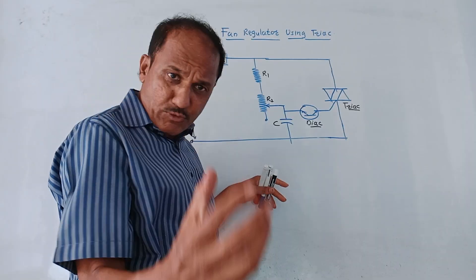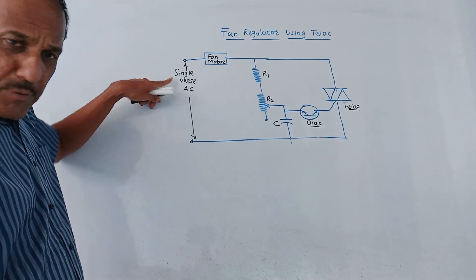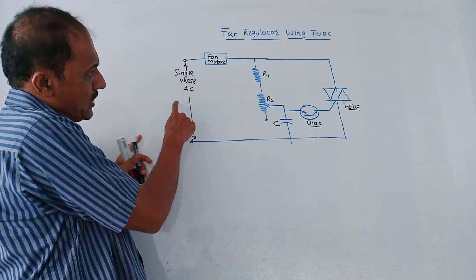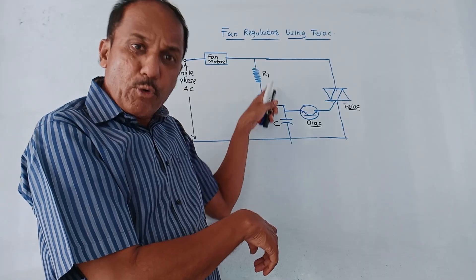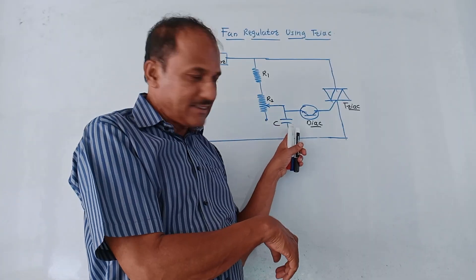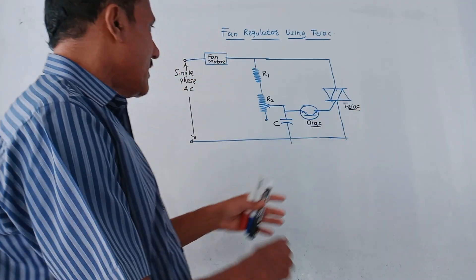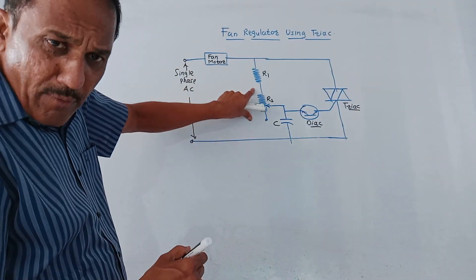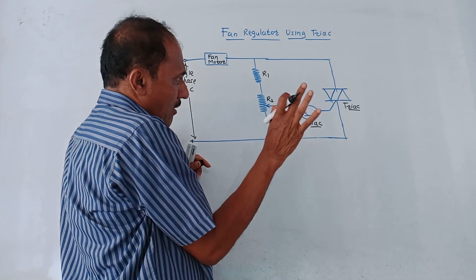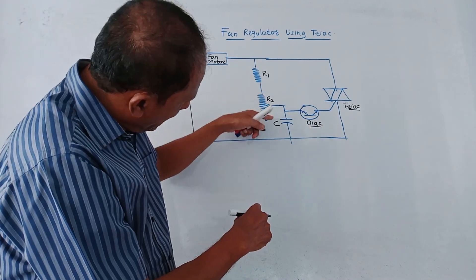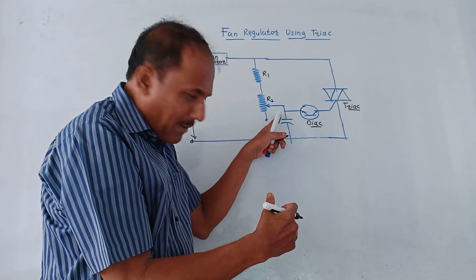The next topic is a fan regulator using a TRIAC. This is an application of power devices — how to regulate fan speed using a combination of DIAC and TRIAC. The corresponding circuit diagram shows single phase AC input, a fan motor, two resistors R1 and R2 (where R2 is a potentiometer, i.e., a variable resistor), and a capacitor C. The output of the DIAC is connected to trigger the TRIAC. Initially the potentiometer R2 is kept at the maximum position to avoid false triggering.